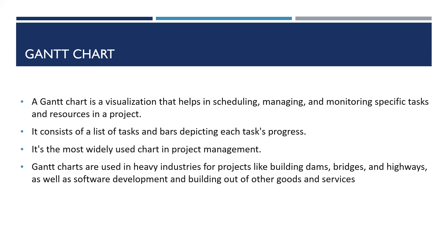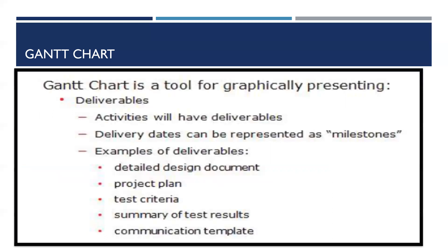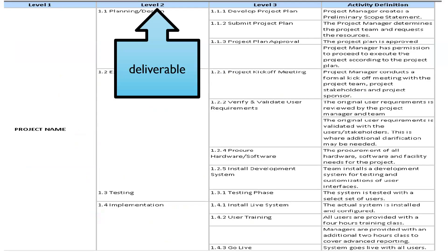Gantt charts have been used by heavy industries for projects like building dams, bridges, and highways, as well as software development and other goods and services. In a Gantt chart, deliverables have activities; delivery dates can be represented as milestones. Examples of deliverables include: project plan, test criteria, summary of test results, and communication templates. Deliverables belong to level-two WBS.